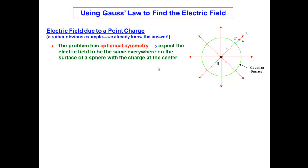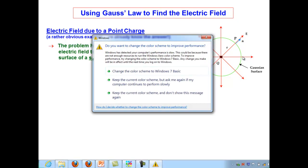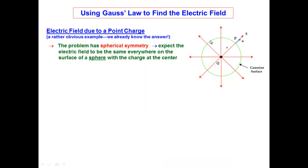In Gauss's Law, the very first step when we have a charge distribution for which we want to find the electric field, is to figure out what the field lines look like — and that depends on the symmetry of the charge distribution. Once we find out what the field lines look like, then we can choose a surface. As long as it's a closed surface that encloses the charge, it makes the evaluation of the flux integral in Gauss's Law easy. It'll make more sense after I've shown you the steps.